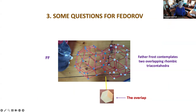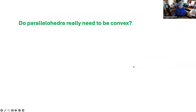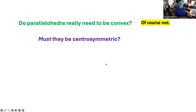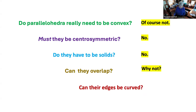That leaves us with some questions for Fedorov. Do parallelohedra really need to be convex? Of course not. Must they be centrosymmetric? No. Do they have to be solids? No. These are our questions, not his questions. Can they overlap? Why not? Can their edges be curved? Sure. That's sort of the difference in thinking between the two times. And I think there's a really tremendously new era here.